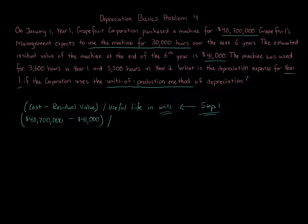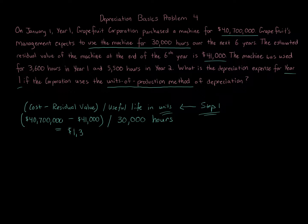Dividing cost minus residual value by 30,000 hours gives us the depreciation per unit — in this case, per hour. That works out to $1,355.30 per hour the machine is used. That completes Step One.